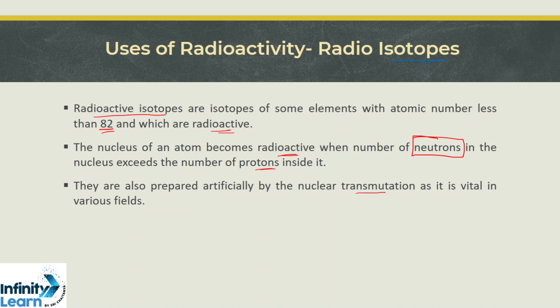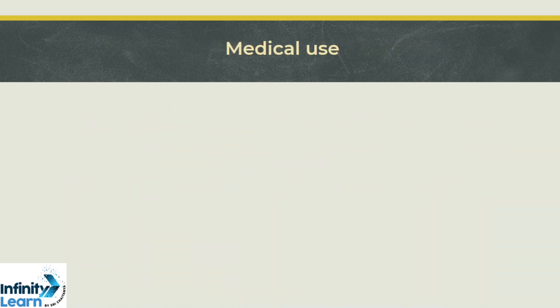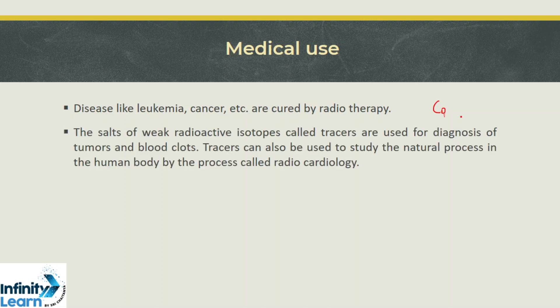Let us check out applications in medical use. First, to treat diseases like leukemia and cancer by radiotherapy. Gamma radiations from cobalt are used to treat cells in malignant tumors. Salts of weak radioisotopes are used as tracers, and after injecting in the bloodstream, they are used to diagnose the presence of tumors and blood clots.